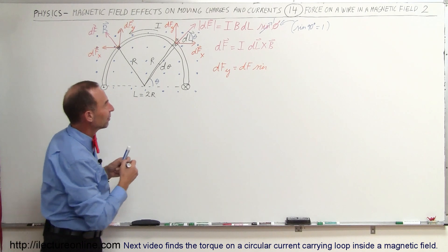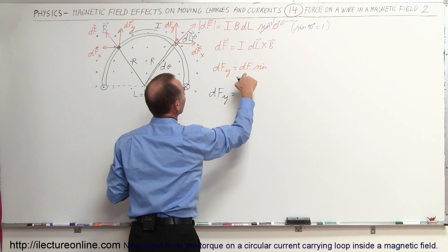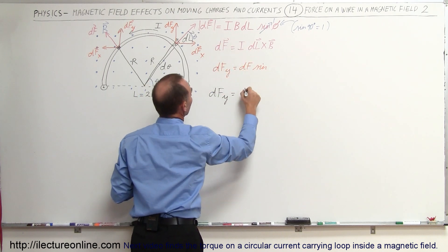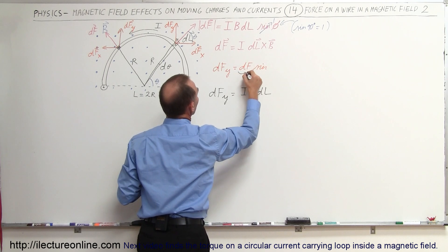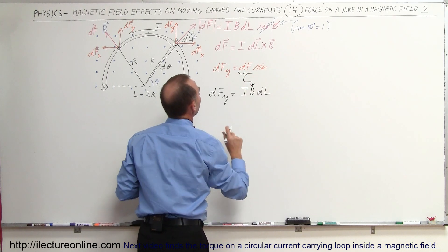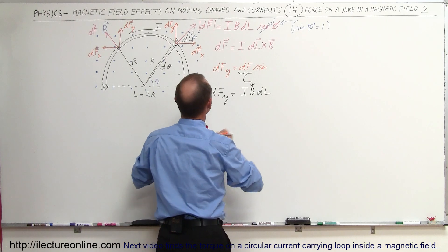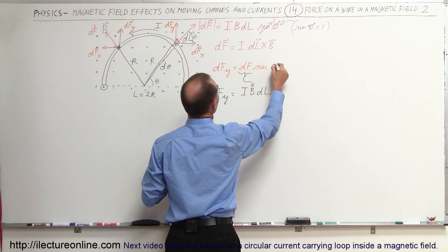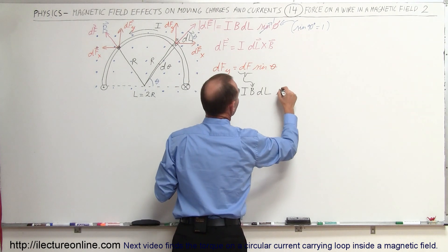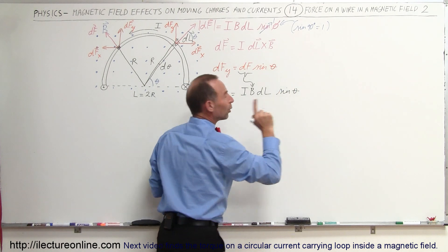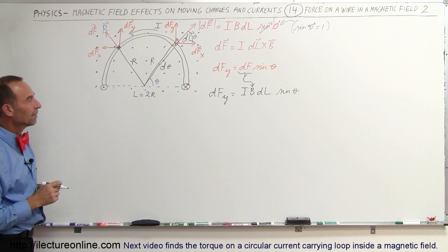So we now have an equation for DFy: DFy = I·B·DL times sine of theta, because we only want the Y component, not the total DF.